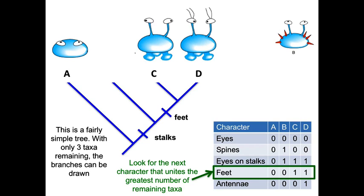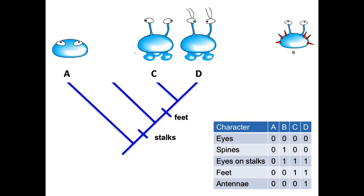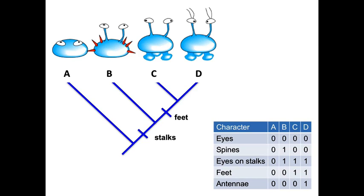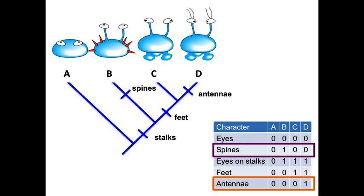Now I put C here and D here — this could be D and this could be C, it doesn't matter because it can spin on that node. The only one left is B, so we can stick B on here. But then we have some other features like antennae and spines. You only have spines in B and only antennae in D. Spines are only in B, so you draw that just on B's branch. Antennae are only in D. Remember, these nodes all spin, and there are probably at least four other ways we could draw this exact same tree.